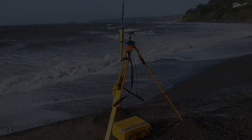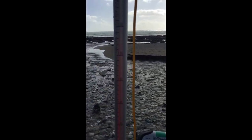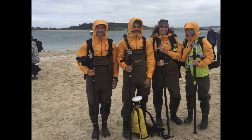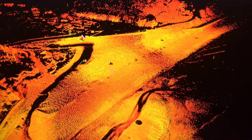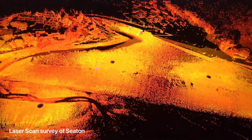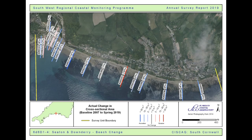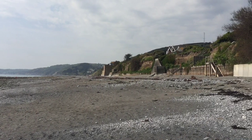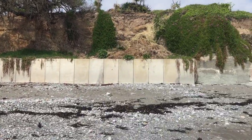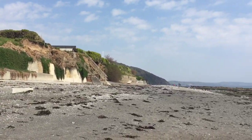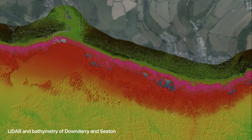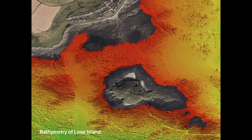Every year we carry out regular beach surveys at Downderry and Seaton during the spring and autumn months and also after storm events. Using our highly accurate GPS equipment, we can measure the height of the beach along specific profile lines during a spring low tide. We also take photographs on each profile to capture a snapshot of the beach. This data provides an indication of the sand levels on the beach — the areas that are eroding, losing sand, and the areas that are accreting, gaining sand.